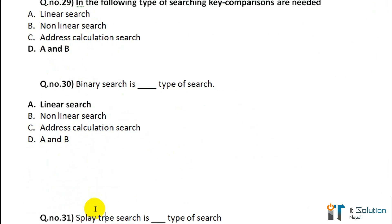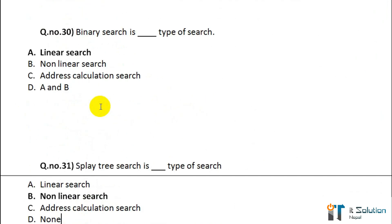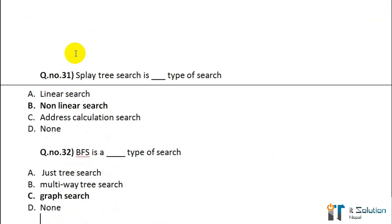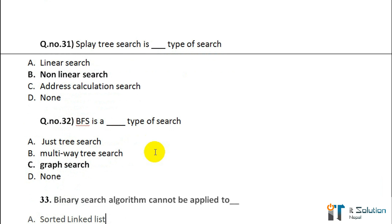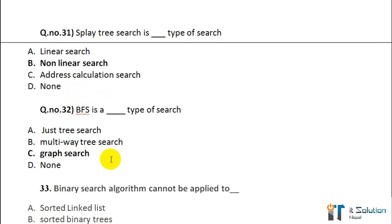Question number 30: Binary search is what type of search? Option A — linear search. Question number 31: Split search is what type of search? Its correct answer is non-linear search. Question number 32: BFS is a type of search — option C — graph search.